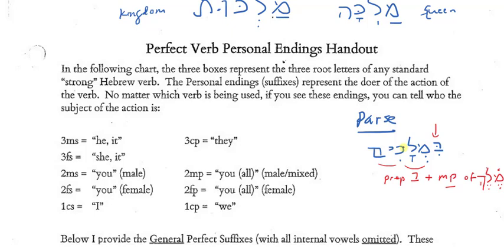So, that's how you would parse a noun form that has a preposition. If all I had was melekim, then my parsing would just be masculine plural of melek, okay? But we're also going to parse verbs. And when you parse verbs, you're going to have to give some information.